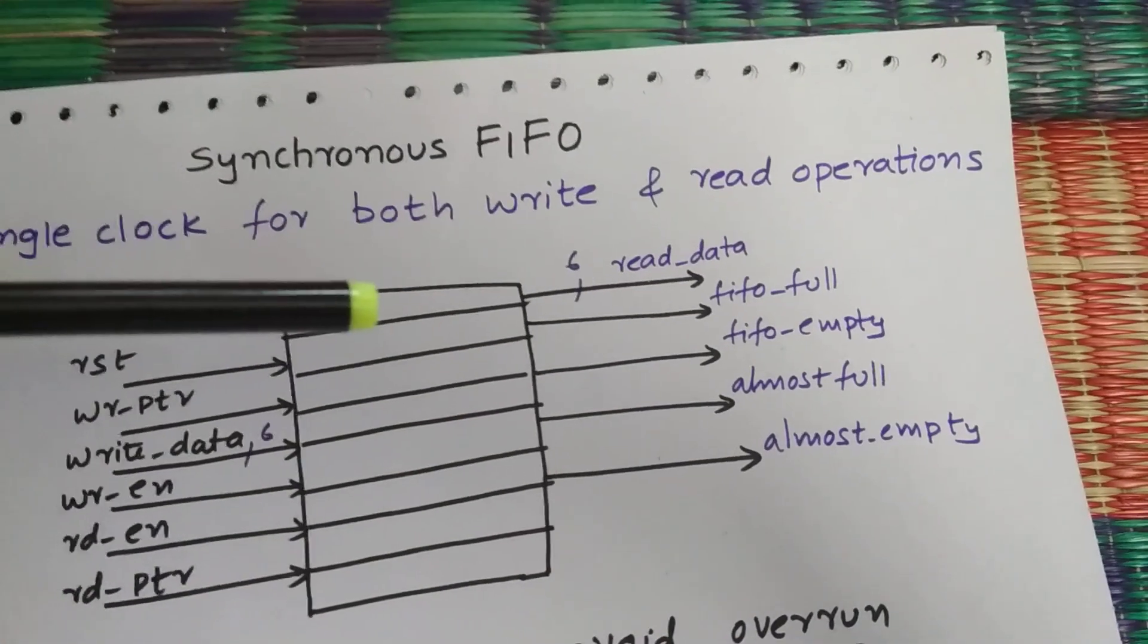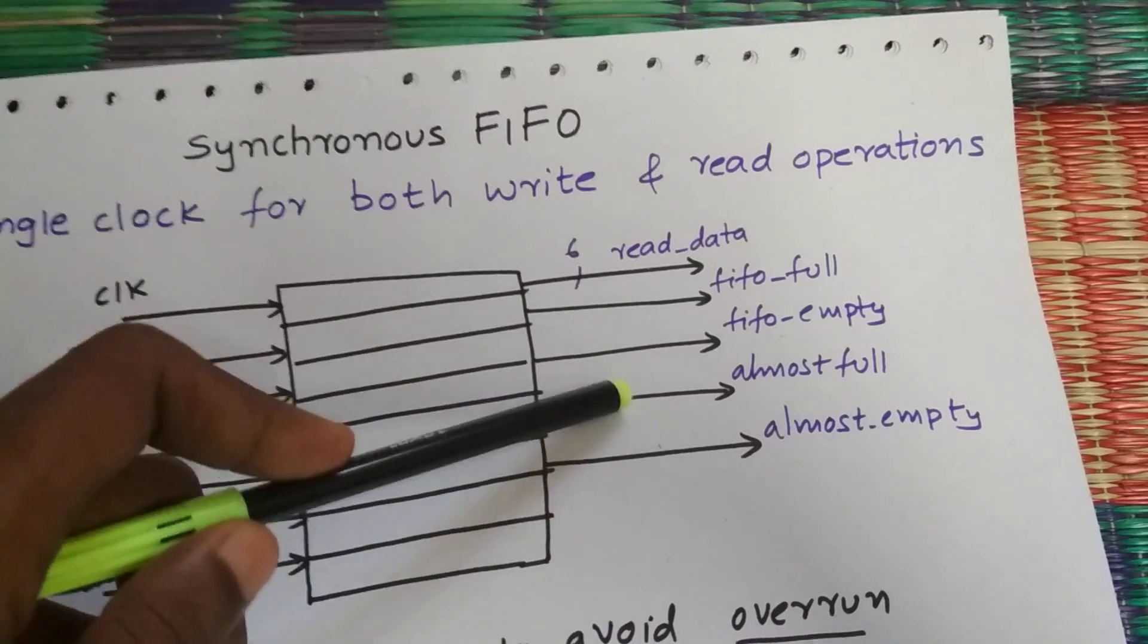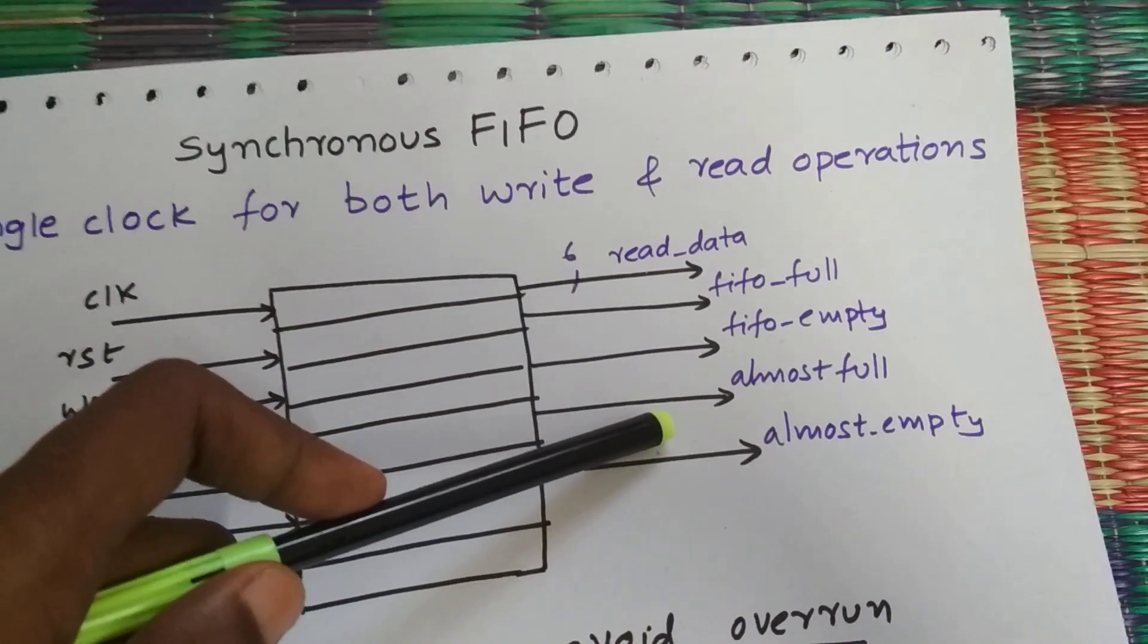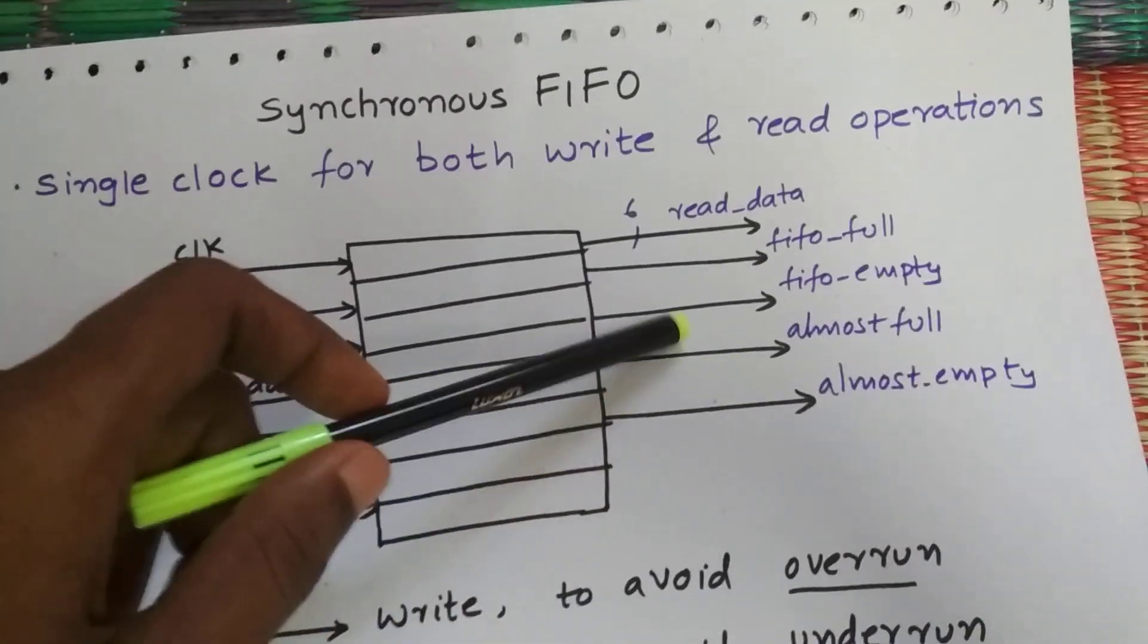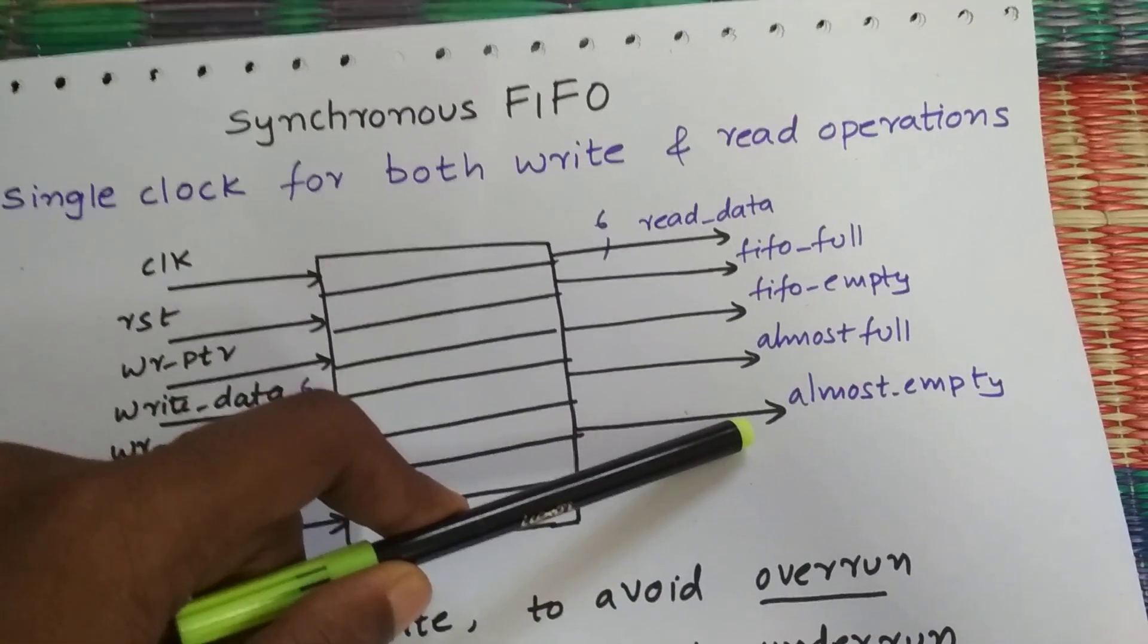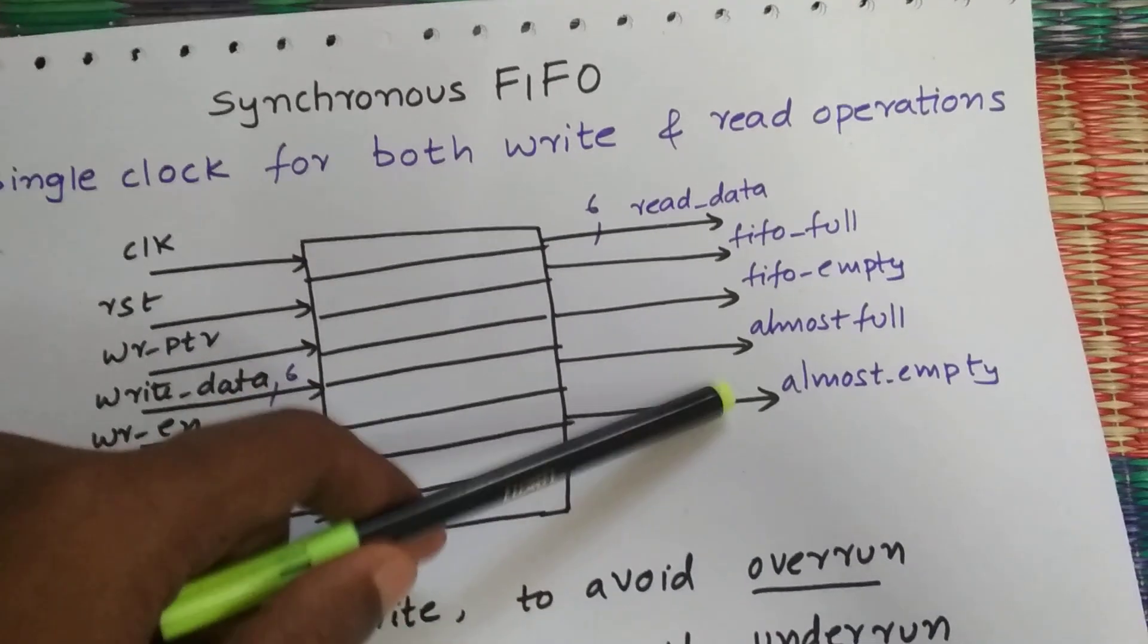These are two important extra additions which prevent data loss. It's almost full and almost empty. What's almost full and almost empty? How it prevents the data loss, you're going to see.